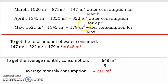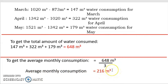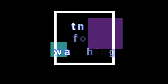To get the total water consumed within three months, we add: 147 plus 322 plus 179 = 648 cubic meters. To get the average monthly consumption, divide the total by three months: 648 ÷ 3 = 216 cubic meters. This is the average monthly water consumption of the Masino family. This is the end of the lesson — thank you for watching, see you next time!